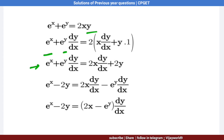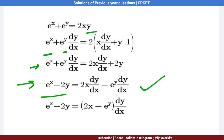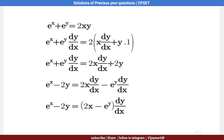Separating terms: e^x − 2y = 2x · (dy/dx) − e^y · (dy/dx). Taking dy/dx as common factor: e^x − 2y = (2x − e^y) · (dy/dx).